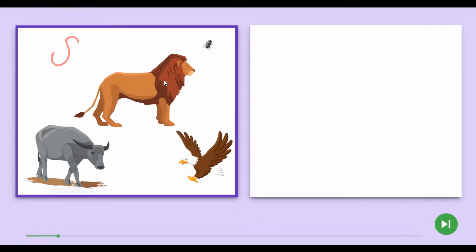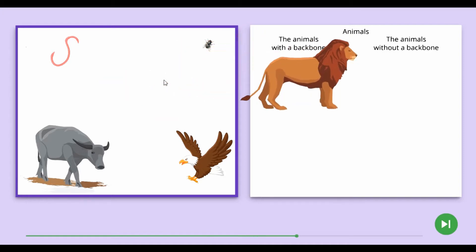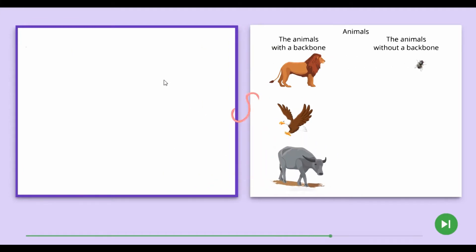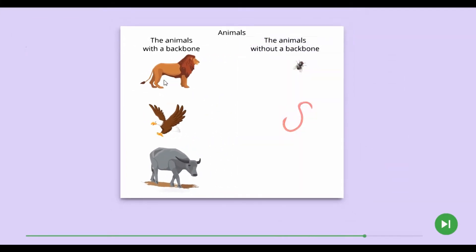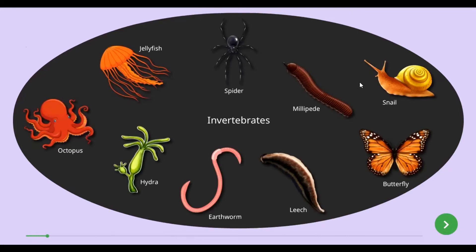Animals are categorized into groups based on their common features in order to study about this animal world of a huge number of species. Animals are divided into two main groups: vertebrates, which have a backbone or vertebral column, and invertebrates, which do not. Now we will further study about invertebrates. The invertebrates have been categorized systematically by considering their common features, and we will discuss four main groups in this lesson.